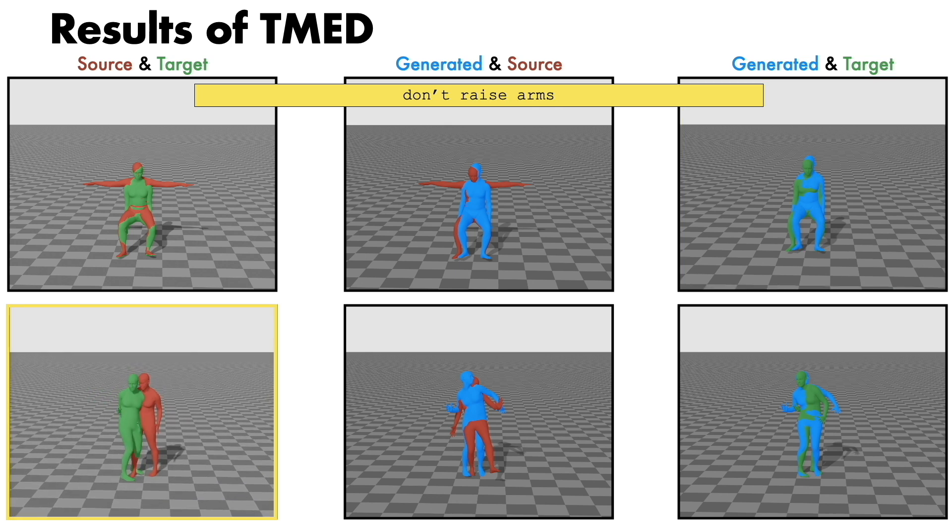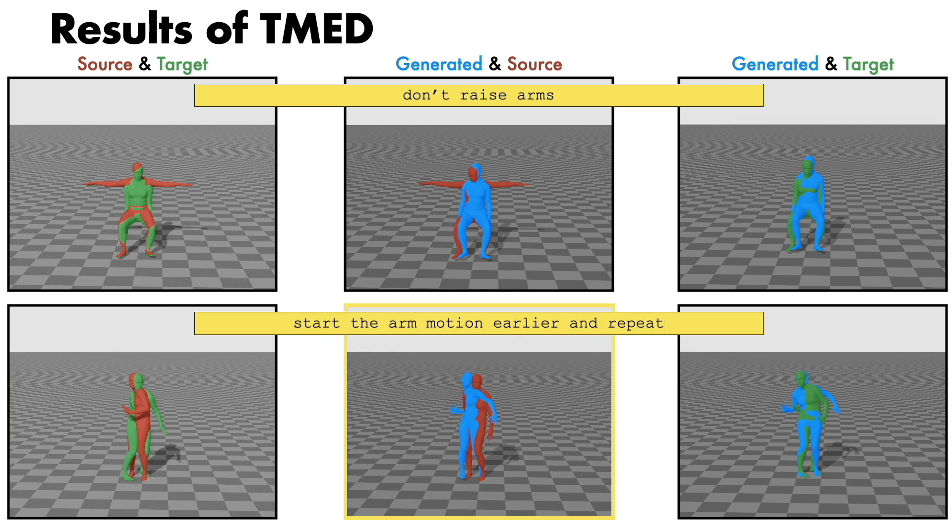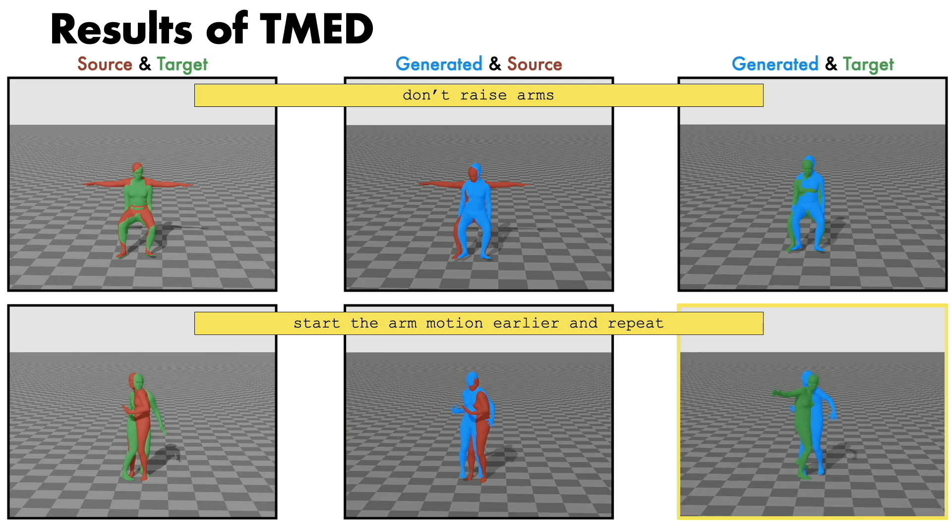In the bottom, the source animation punches once. Given the edit text start the motion earlier and repeat, our generation starts punching earlier and repeats the punching motion.